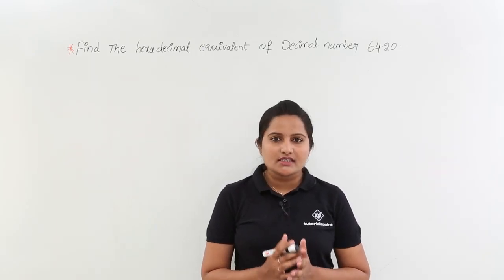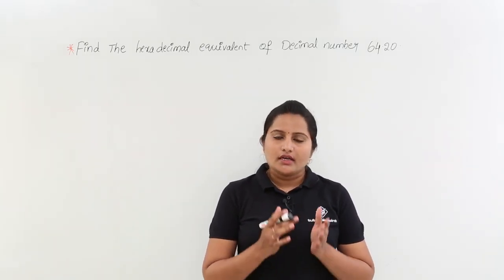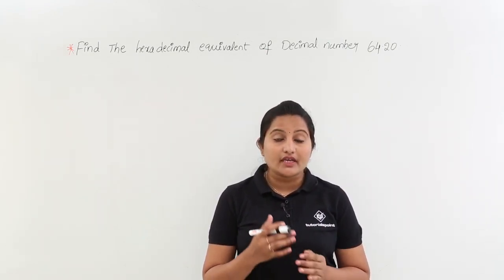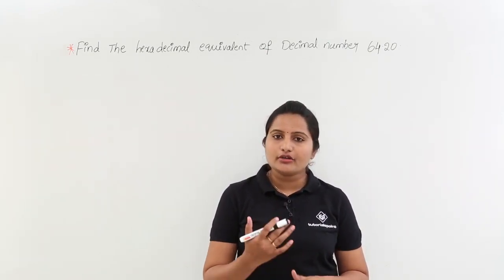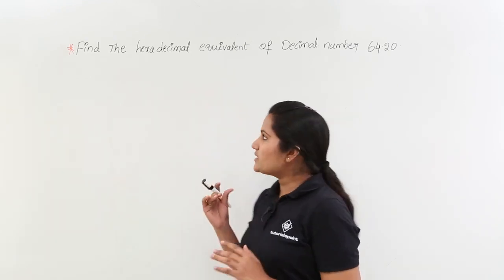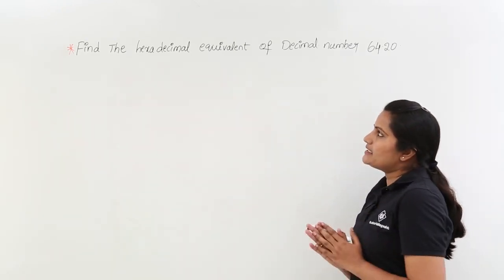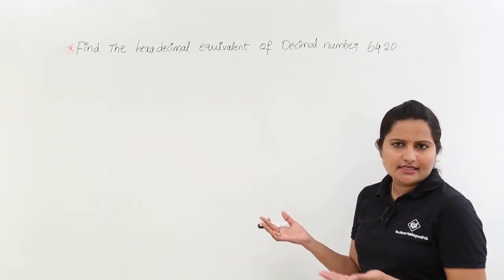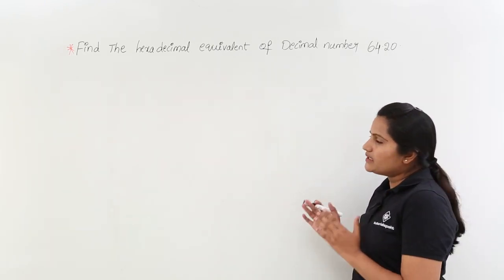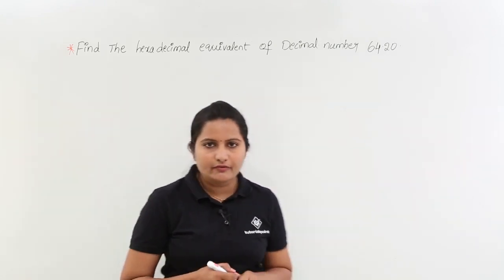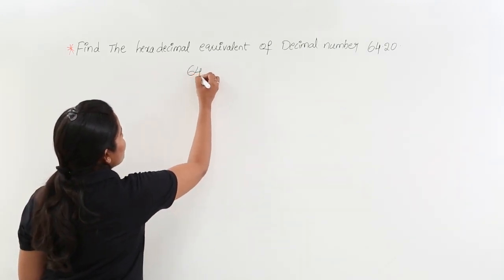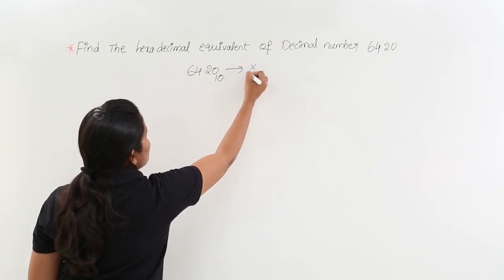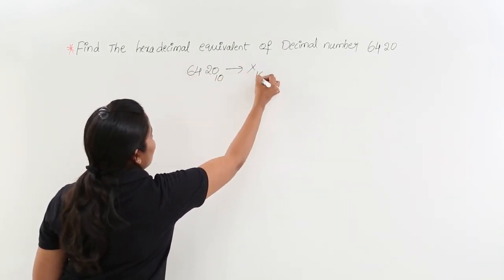In this class, we are going to discuss a problem related to the hexadecimal equivalent of a decimal number. We are going to convert a decimal number into its hexadecimal equivalent. Find the hexadecimal equivalent of decimal number 64.20. You need to write clearly: 64.20 is a decimal number, and we need to convert it into hexadecimal equivalent.